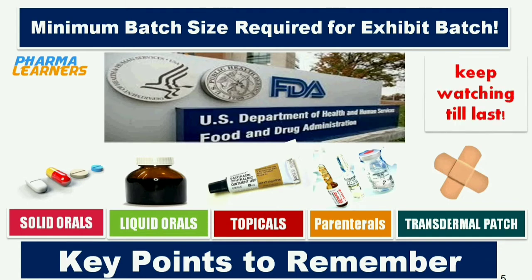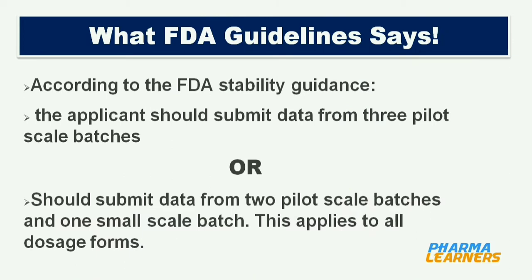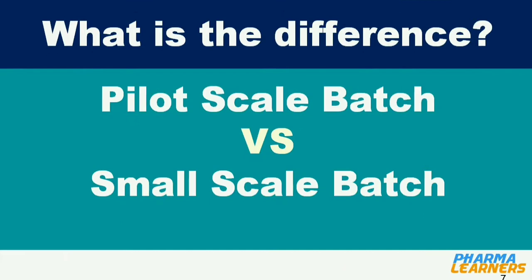According to the FDA Stability Guidance, the applicant should submit data from 3 pilot scale batches, or from 2 pilot scale batches and 1 small scale batch. This applies to all dosage forms. So it is clear that we have to submit data from a minimum of 3 batches. Now, what is the meaning of pilot scale batches and small scale batch? I will start with solid orals.